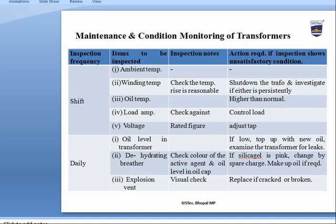Inspection checks include temperature rise, load amperes against rated load, and whether secondary voltage is at the rated value. If winding temperature exceeds design value, the transformer is shut down and investigated. If oil temperature is higher than design value, the transformer is shut down or protection is applied. Daily inspections cover oil level, dehydrating breather, and explosion vent.